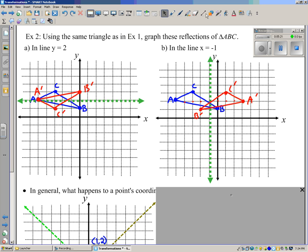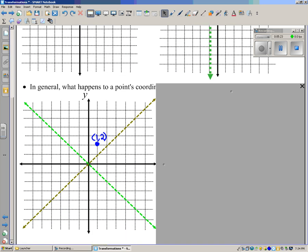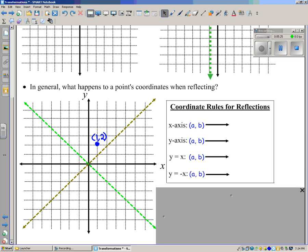The last thing I wanted to do was, in general, what happens to a point's coordinates when reflecting? In other words, can we find a rule? If we just have a general point, we'll call it AB. Is there a rule for what happens when we reflect over all these lines of reflections?